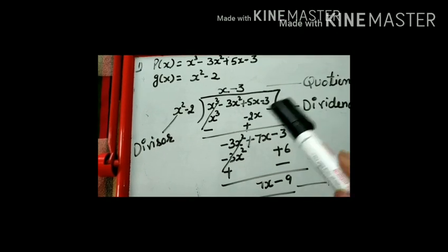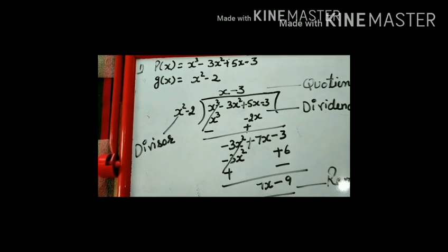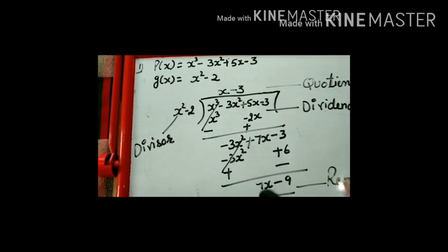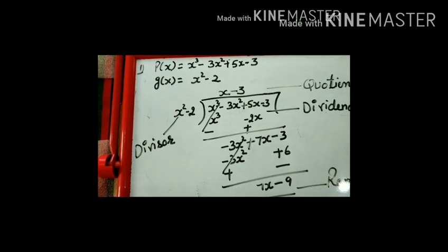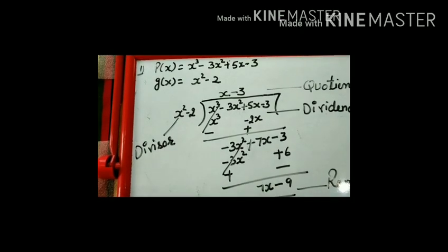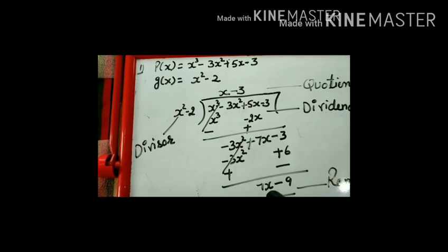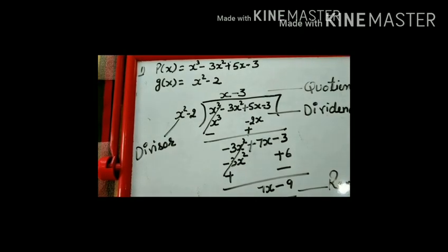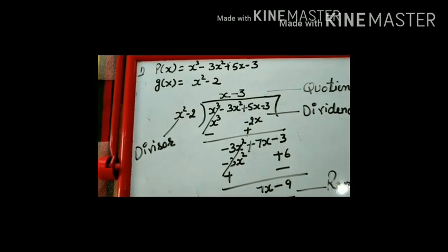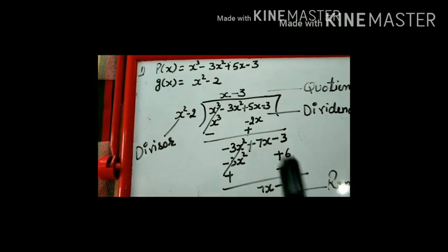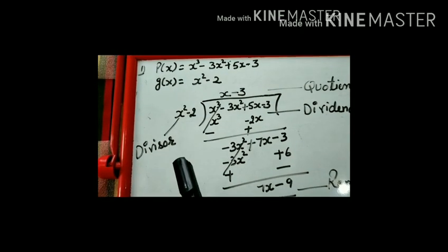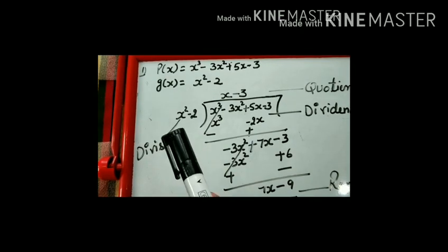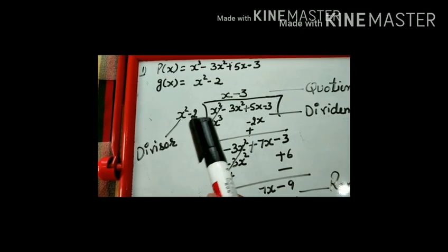We check: x² is our divisor term, and we need to multiply by -3 to get -3x². So we multiply -3 with the other term: -3 × -2 = +6. The quotient is x - 3. The dividend is x³ - 3x² + 5x - 3, and the remainder is 7x - 9. The divisor is x² - 2.